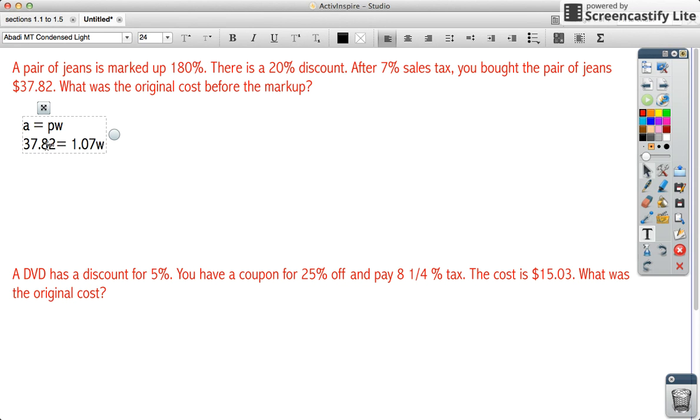If we divide $37.82 divided by 1.07, that gives us about $35.35, but I'm not going to round because we want to use the most accurate data as possible. That's what it says on my calculator, but I'm just going to leave it on my calculator. So that's W.